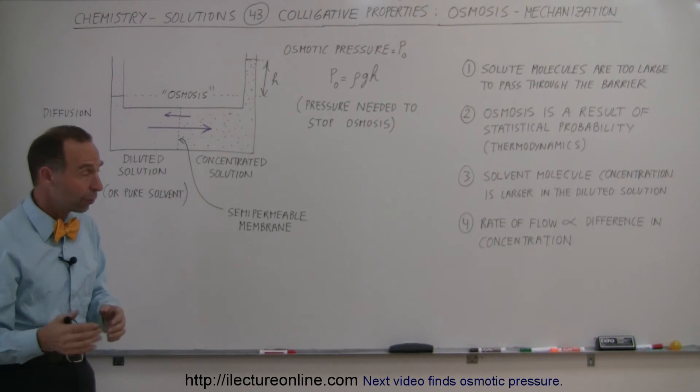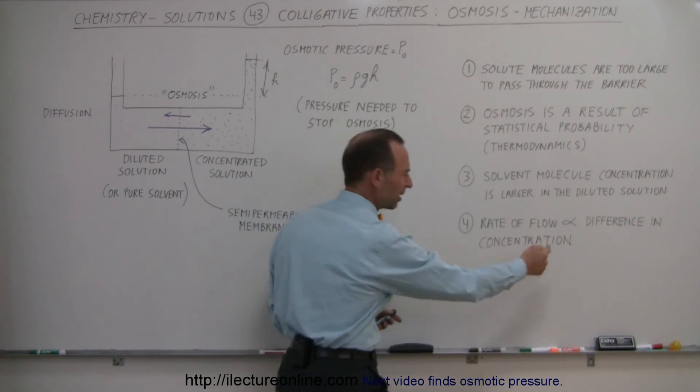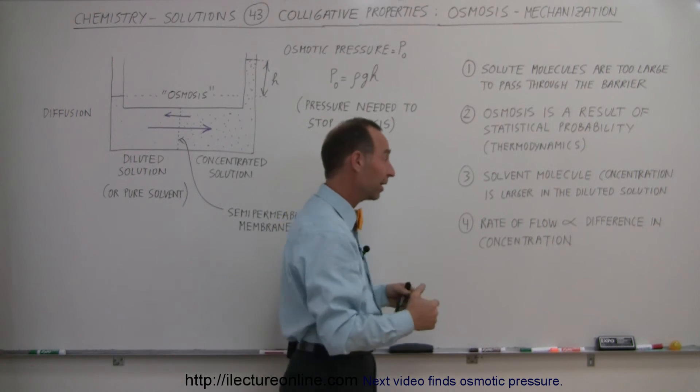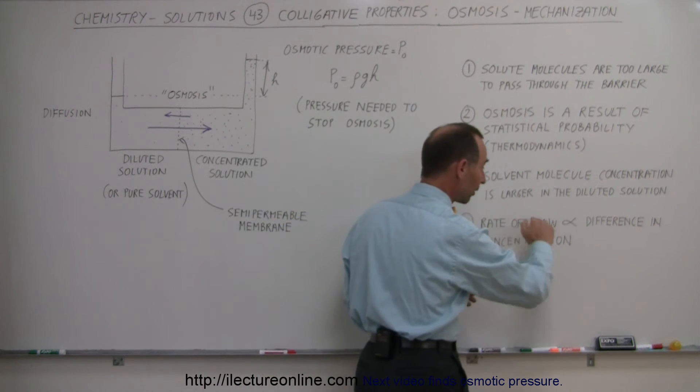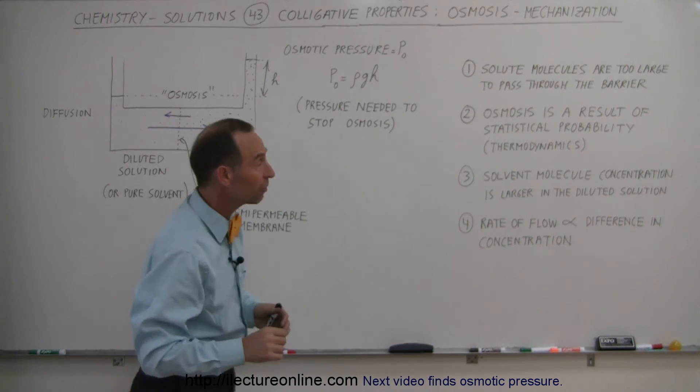And then, fourthly, we know that the rate of the flow will be proportional - this symbol here is meant to be proportional to, that's what we use in mathematics. So the rate of flow across that boundary is proportional to the difference in the concentration of the solvent molecules.